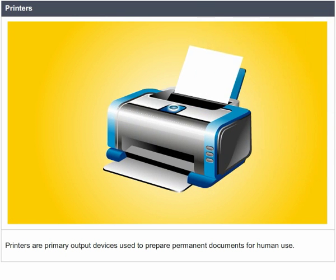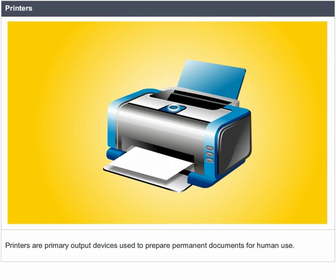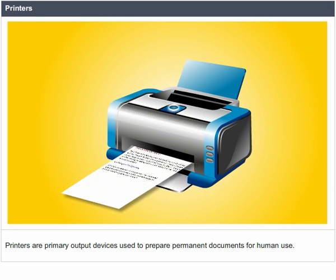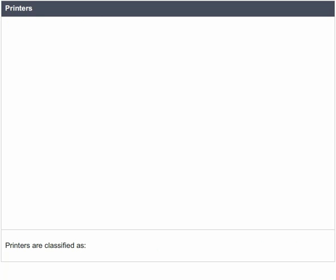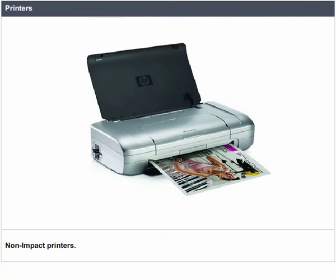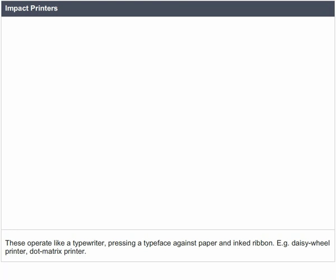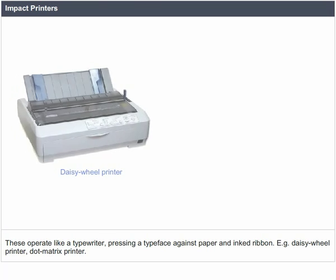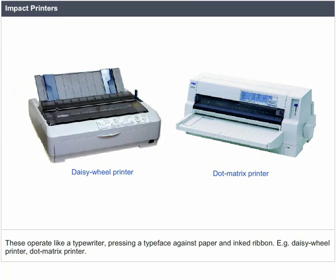Printer: Printers are primary output devices used to prepare permanent documents for human use. Printers are classified as impact printers, letter quality printers, line printers, and non-impact printers. Impact printers operate like a typewriter, pressing a typeface against paper and an inked ribbon. Examples include the daisy wheel printer and dot matrix printer.